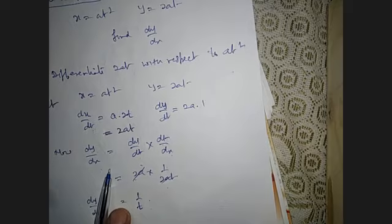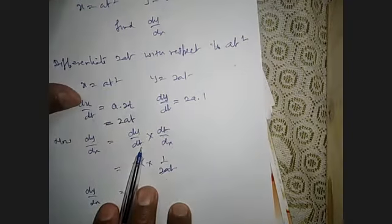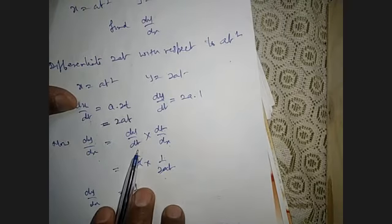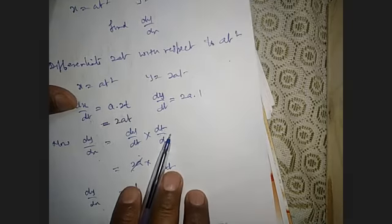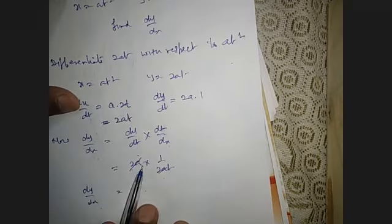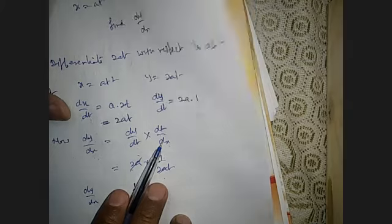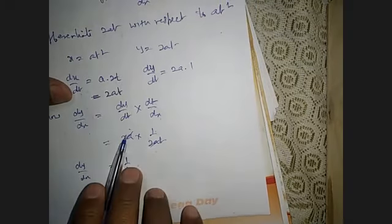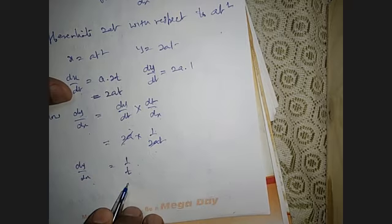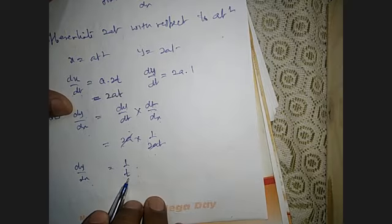Now, dy/dx — using the chain rule: dy/dx = dy/dt × dt/dx. Since y depends on t and x also depends on t, dy/dt = 2a. But we have dx/dt, so we take its reciprocal to get dt/dx = 1/(2at). So dy/dx = 2a × 1/(2at), and the 2a cancels, giving dy/dx = 1/t.